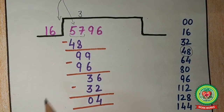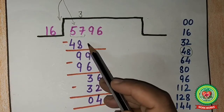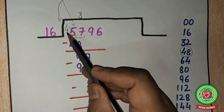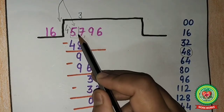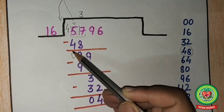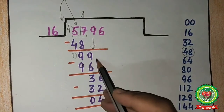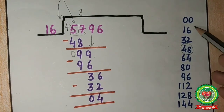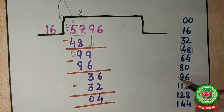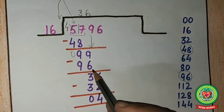Next step is subtract: 7 minus 8 — since 7 is smaller, we borrow — 17 minus 8 is 9, then 4 minus 4 is 0. Next step is bring down the next digit, which is 9. Bringing it down gives us 99. Again, see the table of 16. 99 does not appear, so we need the number just less than 99. That is 96. 16 times 6 is 96. So 6 comes up and 96 comes here.